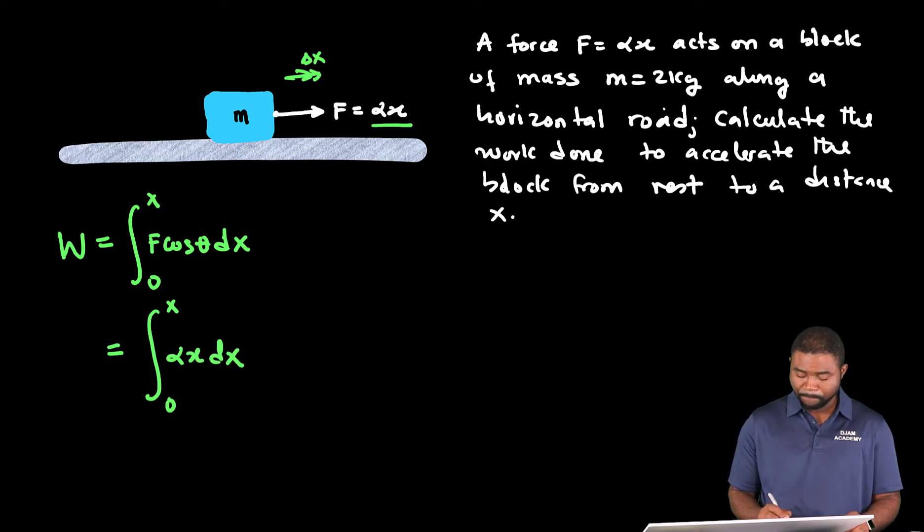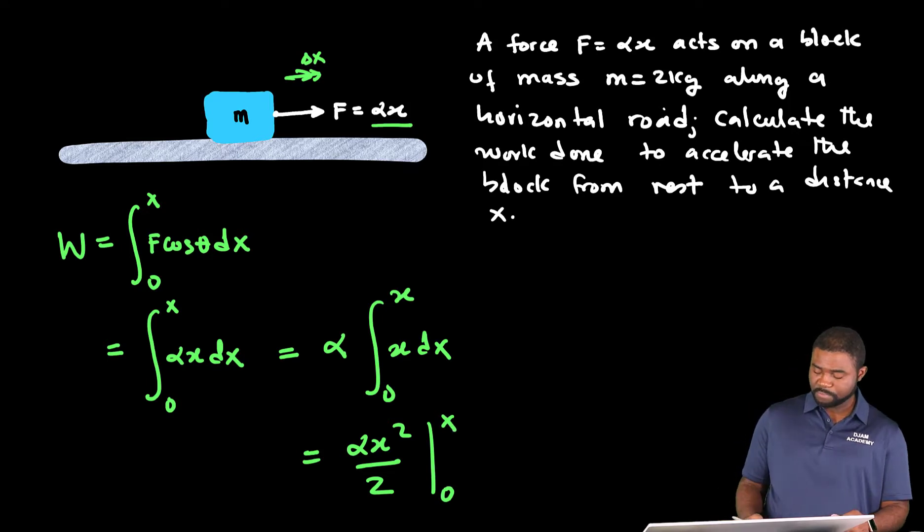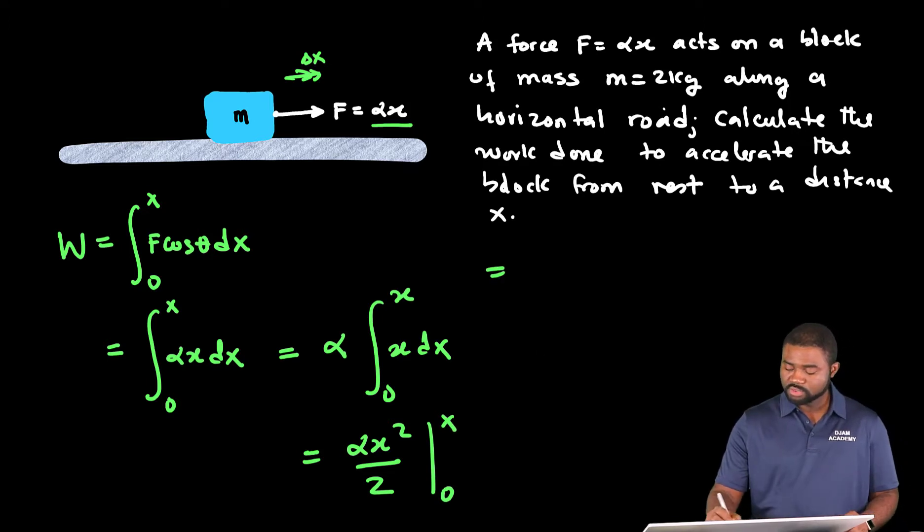This is just equal to alpha times the integral from zero to x of x dx. This is just going to be equal to alpha x squared all divided by two, and we are integrating from zero to x.